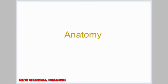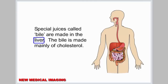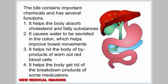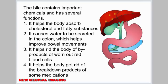Anatomy. Special juices called bile are made in the liver. The bile is made mainly of cholesterol. The bile contains important chemicals and has several functions: it helps the body absorb cholesterol and fatty substances; it causes water to be secreted in the colon, which helps improve bowel movements; and it helps rid the body of byproducts of worn-out red blood cells.